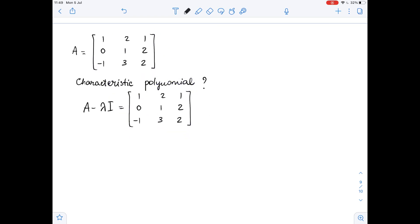minus lambda times the identity matrix. Let's simplify this. We get 1 minus lambda, 2, 1, 0, 1 minus lambda, 2, negative 1, 3, 2 minus lambda